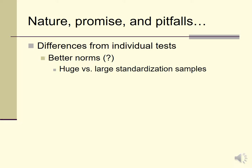Differences in their norms — some group ability tests and achievement tests are developed and standardized with very large samples because it's relatively easier to administer them to large samples. So arguably the norms are going to be a little bit better than those associated with individual tests. That said, this is somewhat speculative, because the major individual tests of ability like the Wechsler system have pretty huge standardization samples themselves. You occasionally hear people argue that group tests have even better norms — possibly in principle, but maybe not so much in practice.